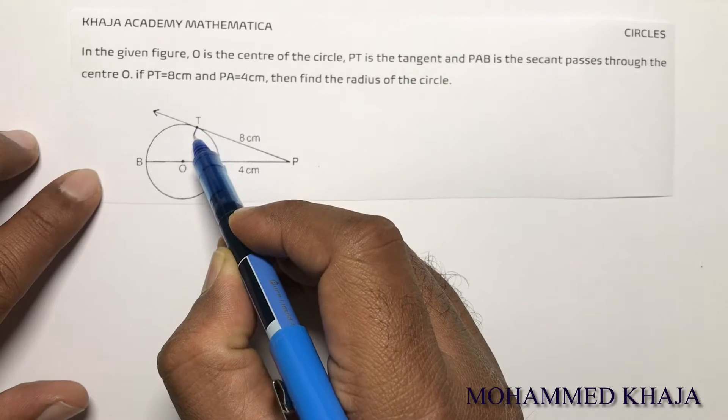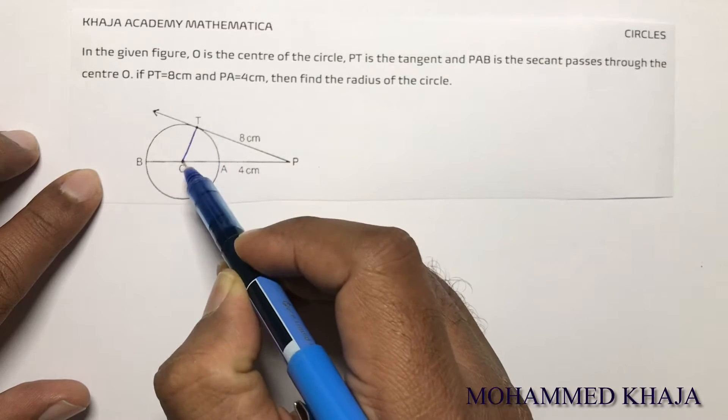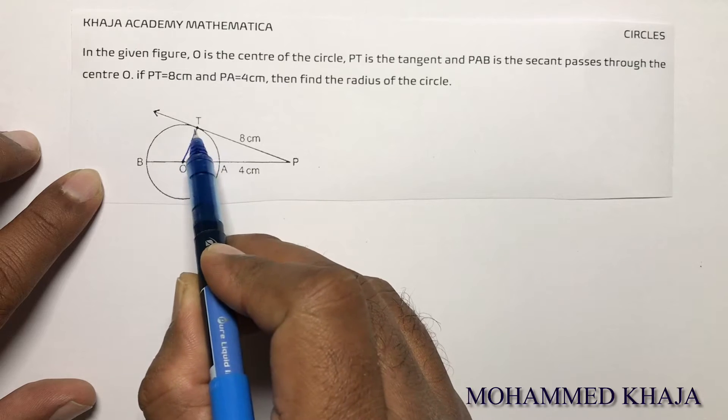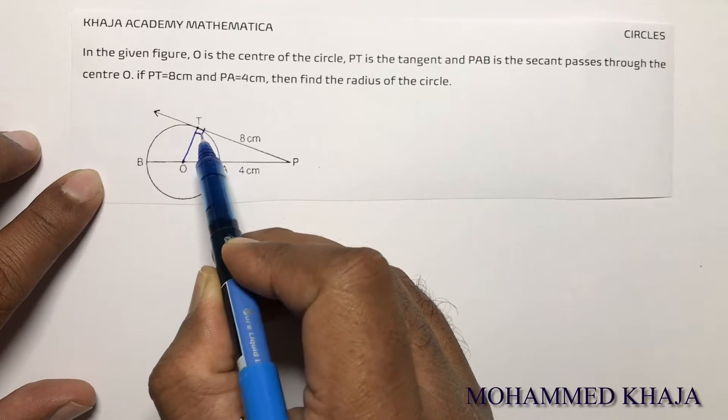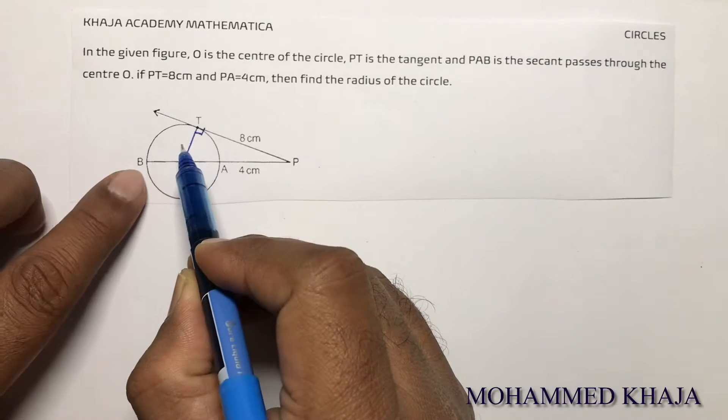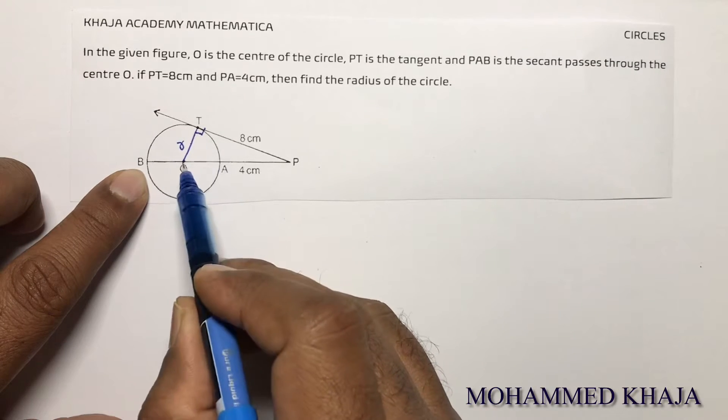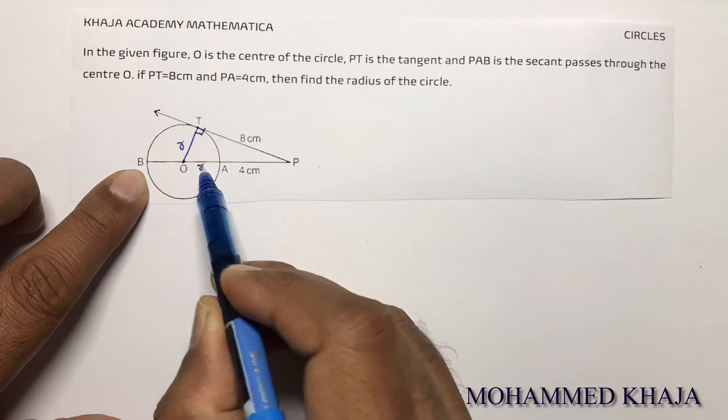I'll join the point of contact T to the radius. The angle between radius and tangent is 90 degrees. I need to find the radius. Consider OT as R. So if OT is R, OA will also be R.